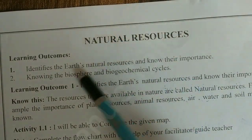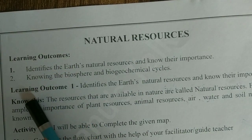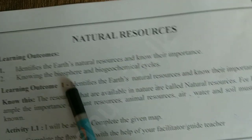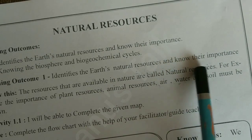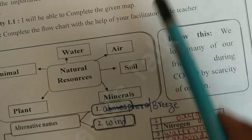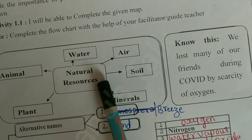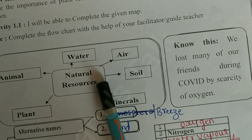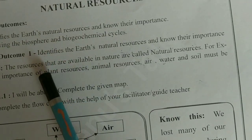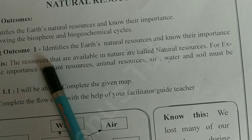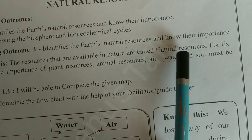Natural Resources. Learning Outcomes 2. In Learning Outcome 1: identify the earth's natural resources and know their importance. This is the flowchart for natural resources. First, let us know what is the definition for natural resources. The resources that are available in nature are called natural resources.